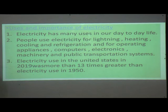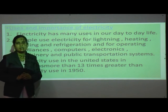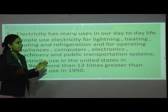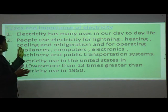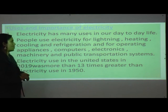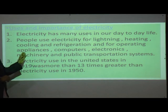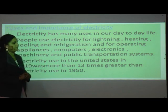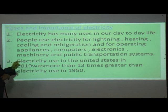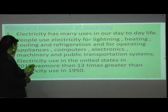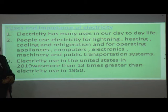Electricity has many uses in our day-to-day lives. People use electricity for lighting, heating, cooling, and refrigeration, and for operating appliances, computers, electronics, machinery, and public transportation systems. Electricity used in the United States in 2019 was more than 30 times greater than electricity used in 1950.